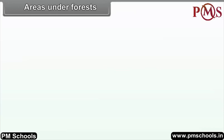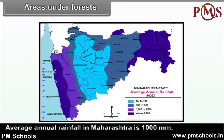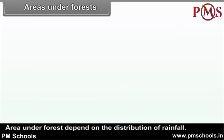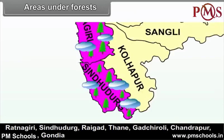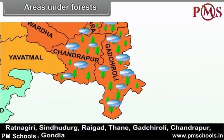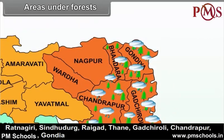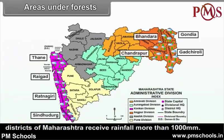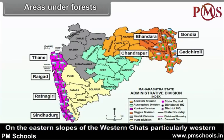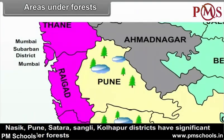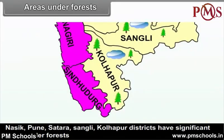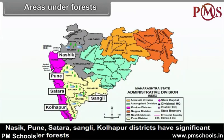Areas Under Forests. Average annual rainfall in Maharashtra is 1000 mm. Area under forests depends on the distribution of rainfall. Ratnagiri, Sindhudurg, Raigad, Thane, Gadchiroli, Chandrapur, Bhandara, and Gondiya districts of Maharashtra receive rainfall more than 1000 mm. On the eastern slopes of the Western Ghats, particularly western parts of Nashik, Pune, Satara, Sangli, and Kolhapur districts have significant areas under forests.